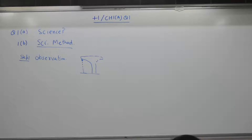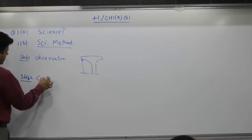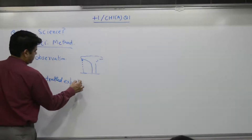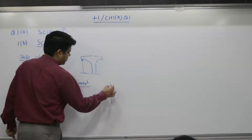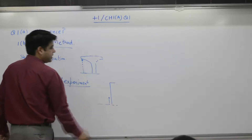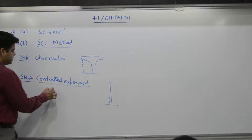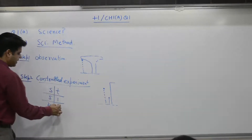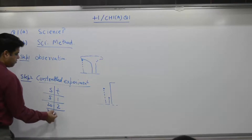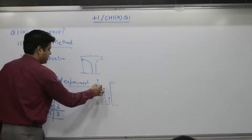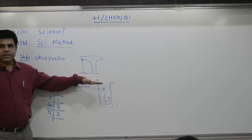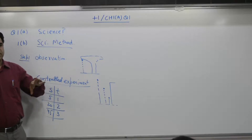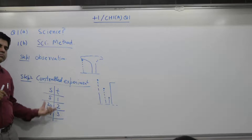Step two: controlled experiment. How much time does it take? An experiment was performed. Distance five meters — time noted: one second. Twenty meters — time came out to be two seconds. Then forty-five meters — time: three seconds. So in the lab, a controlled experiment was performed where distance was controlled by the person and time was measured. He then made a table of the data.